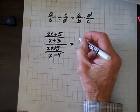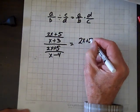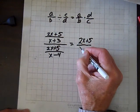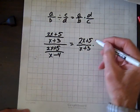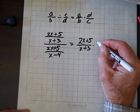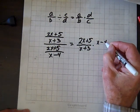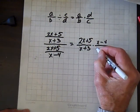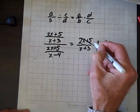Again, we'll invert and multiply. We take the numerator (2x+5)/(x+3) and multiply it times the inverse of that, which is (x-4)/(2x+5).